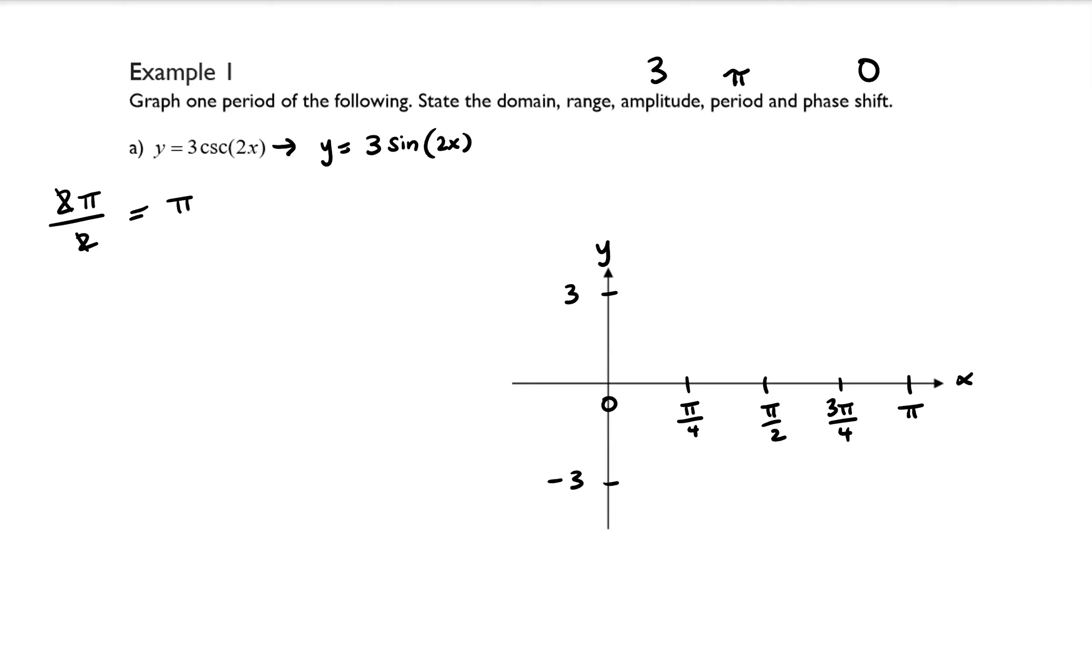So we know that sine, if I plugged in 0, that would be equal to 3 times sine of 0, and I know sine of 0 is 0, and so that's going to end up being 0. So I'll plot a point right here.